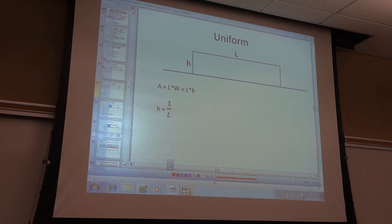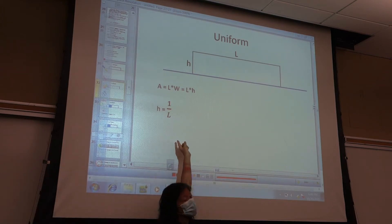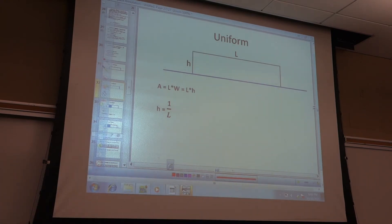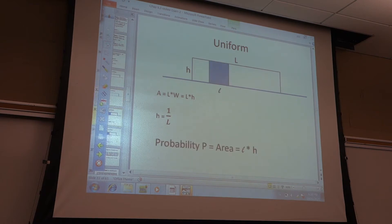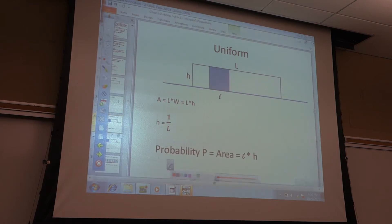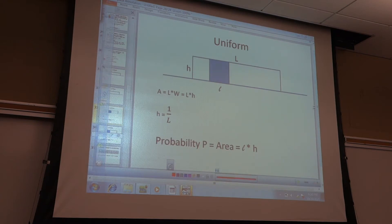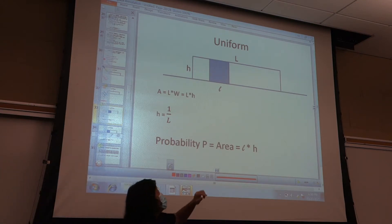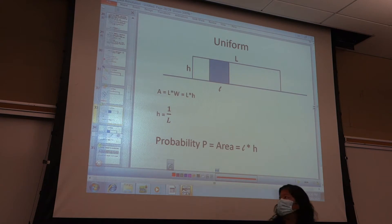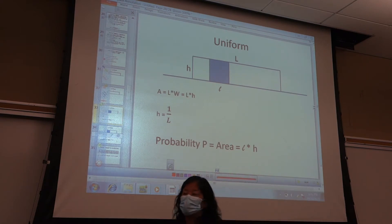We also know that the length times height for the whole thing has to equal one, which means that h has to equal one over the big L — the whole length. And the probability equals the area. So your little area for the problem is little l times height, which gives you your probability.